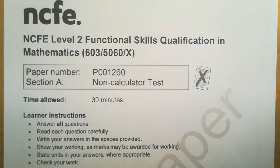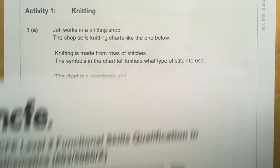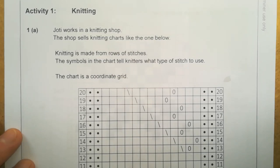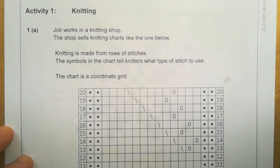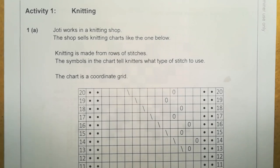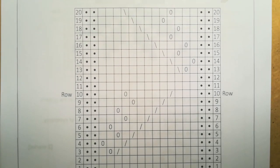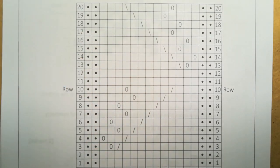This is the NCFE Functional Skills Level 2 Maths practice paper 1260. We're going to start with the non-calculator section, Activity One: Knitting. Jyoti works in a knitting shop. The shop sells knitting charts like the one below. Knitting is made from rows of stitches, and the symbols in the chart tell knitters what type of stitch to use. The chart is a coordinate grid.